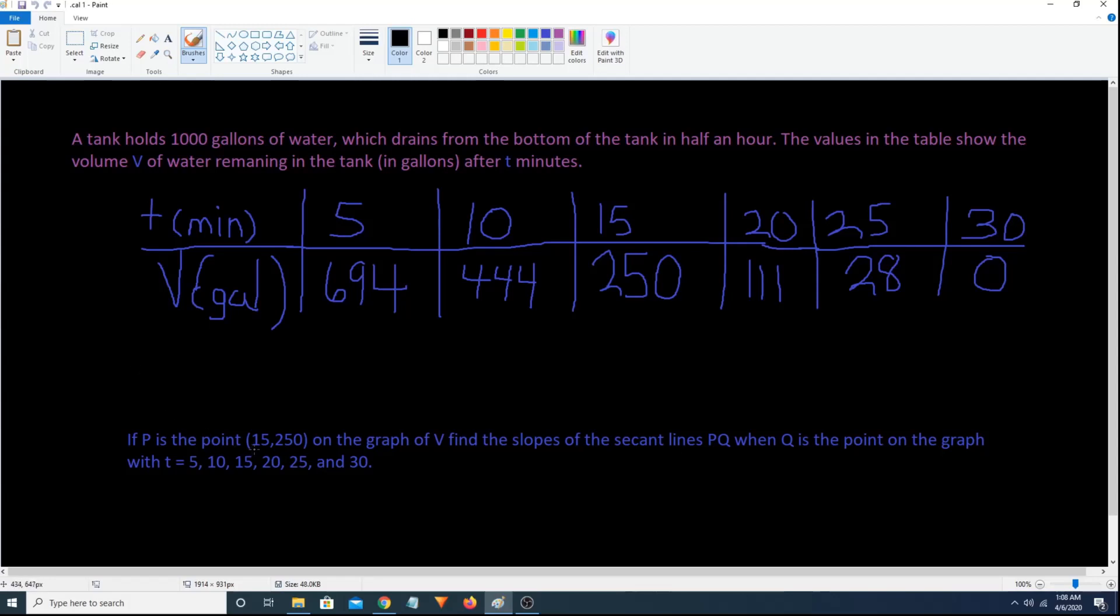If p is the point on the graph of v, find the slopes of the secant lines pq, when q is the point on the graph with time 5, 10, 15, 20, 25, and 30.